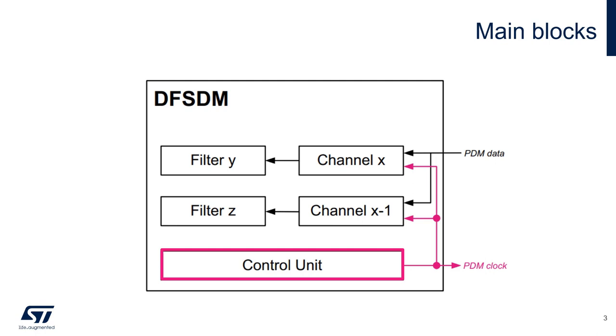When we set up the peripheral, we can assign a filter to the specific channel we want to convert. Depending on the STM32 part number, there can be a variable number of channels and filters. The number of microphones that can be converted in real time is equal to the number of filters.